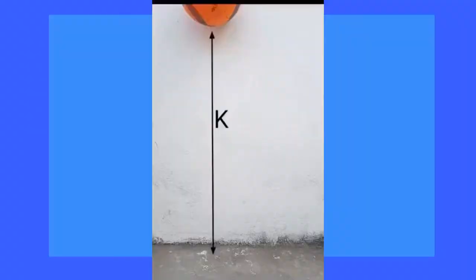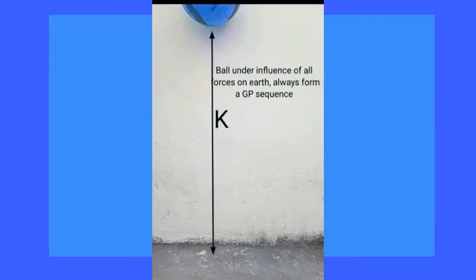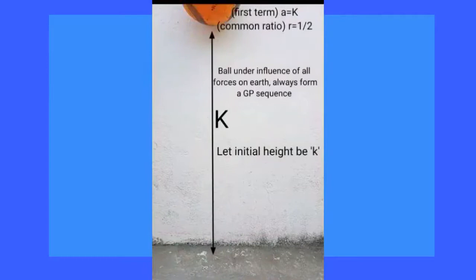Now if we consider the initial height of the ball as k, and the constant fraction by which the maximum height increases every time to 50%, the first term of the GP that is A becomes k, and the constant ratio equals 1 upon 2.